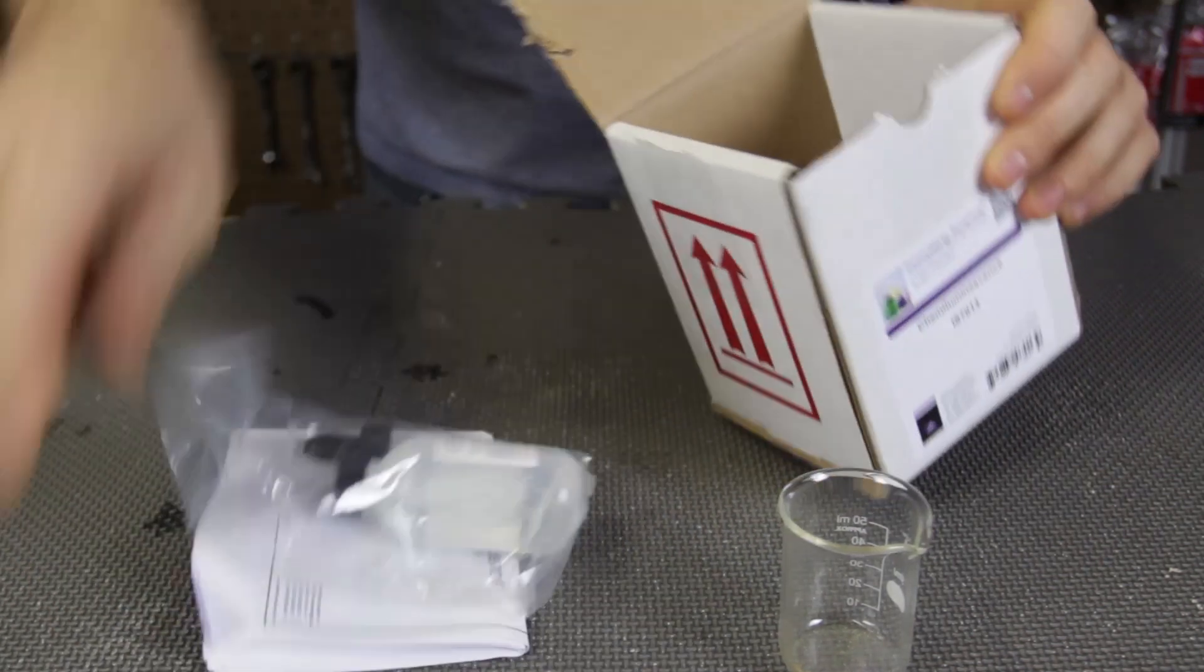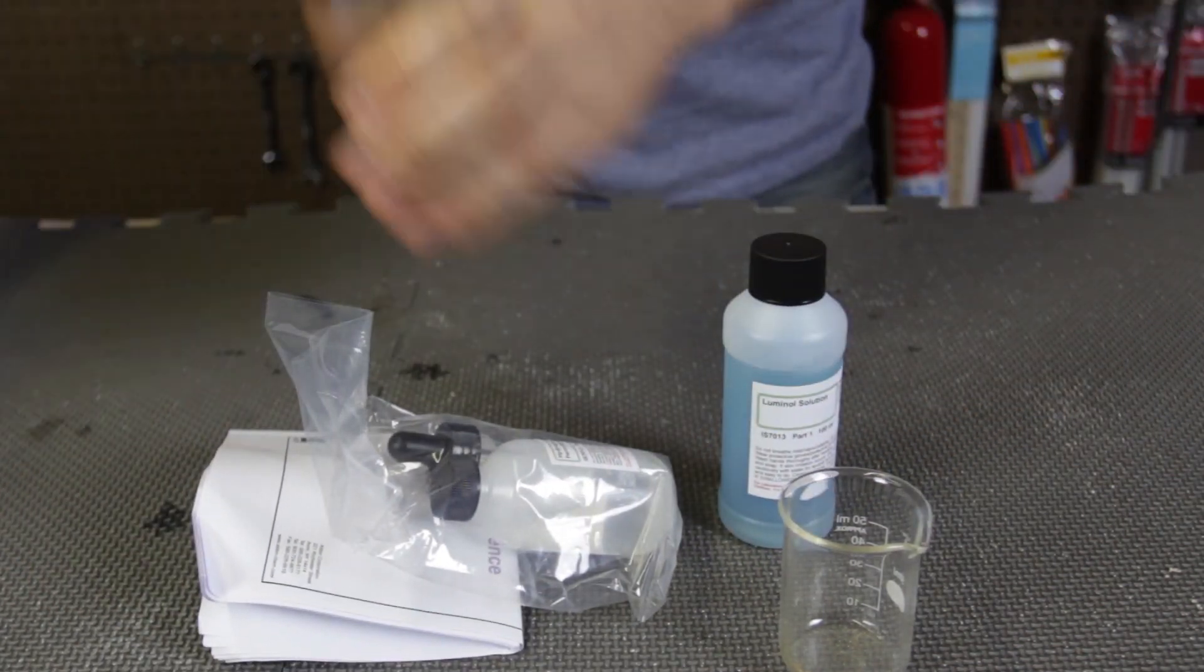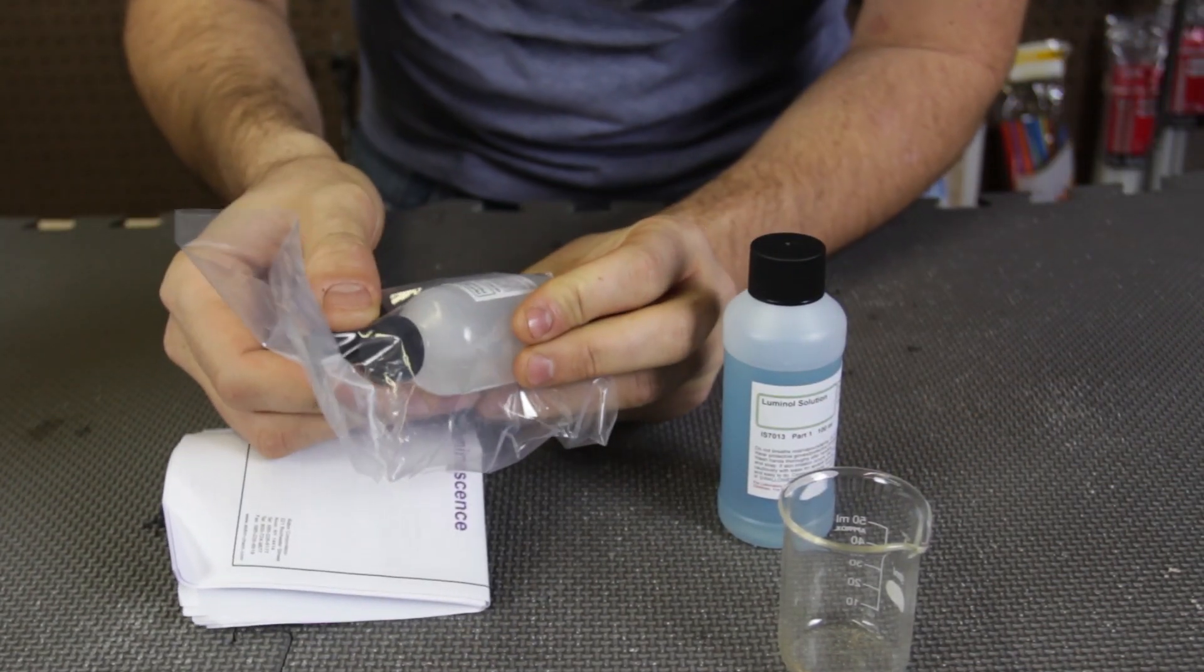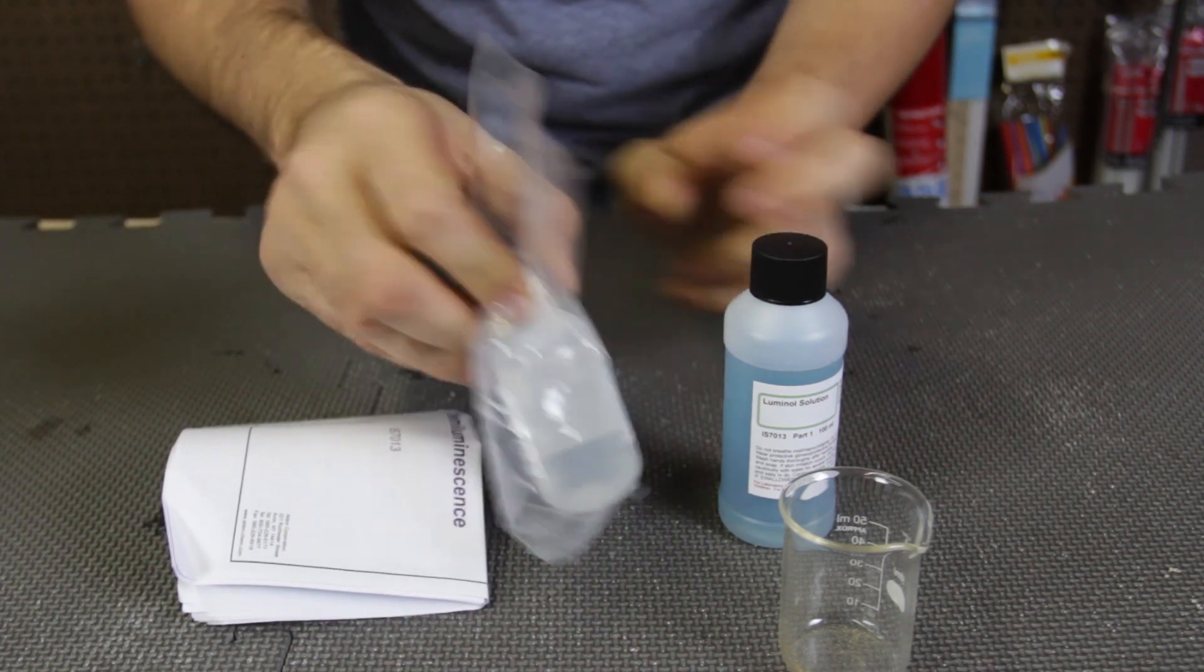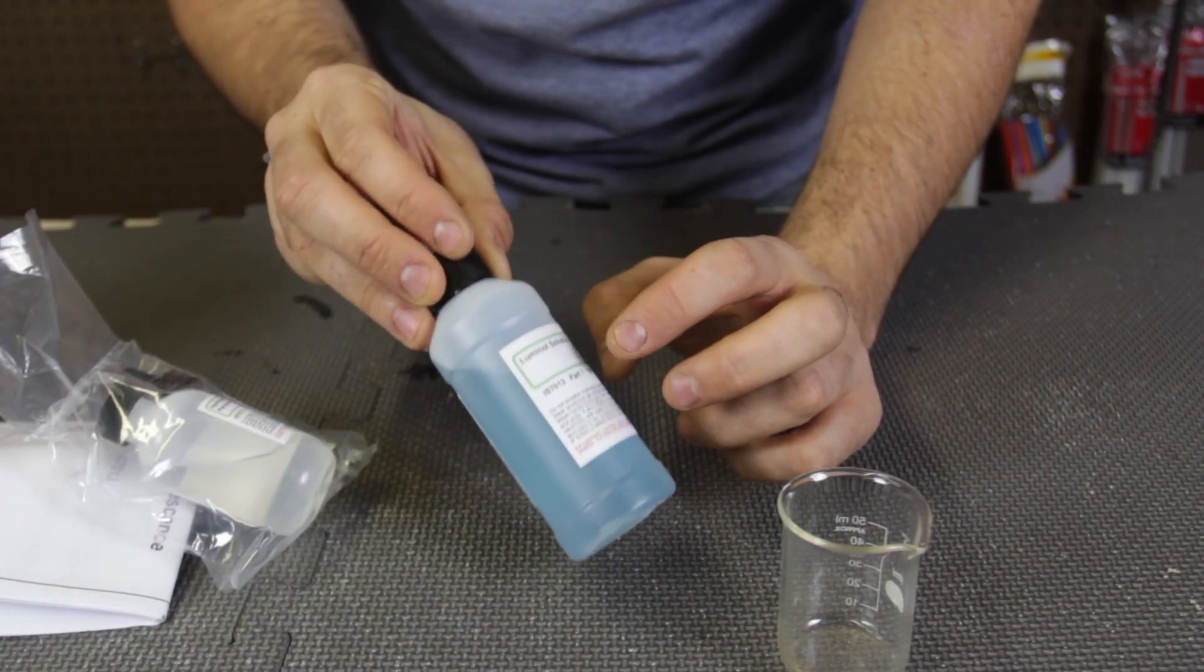Okay, let's open it up, see what's inside of it. Boom, looks like this is hydrogen peroxide, 6%, and this is luminol solution.